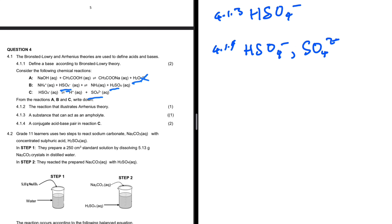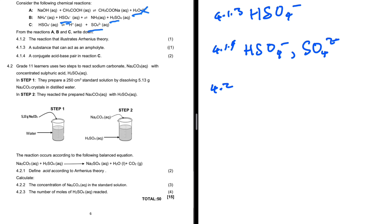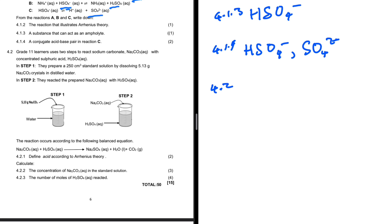Question 4.2: grade 11 learners use two steps to react sodium carbonate with concentrated sulfuric acid. The reaction is Na₂CO₃ plus H₂SO₄ to give Na₂SO₄ plus H₂O plus CO₂. Question 4.2.1 says define acid according to Arrhenius theory. An acid is a substance that produces hydrogen ions or hydronium ions when dissolved in water.